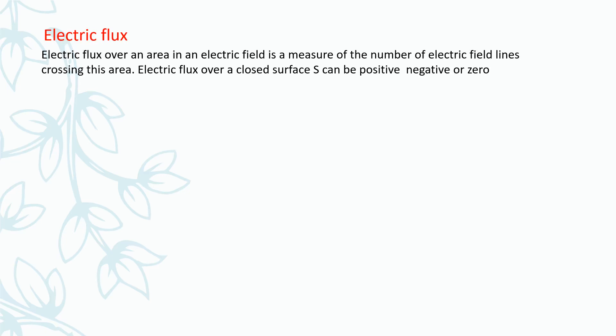Next is electric flux. What is electric flux? Earlier we have studied about electric field lines. Electric flux over an area in an electric field is a measure of the number of electric field lines crossing that area. Electric flux over a closed surface S can be positive, negative, or zero. Electric flux is a scalar quantity and it is denoted by φE.